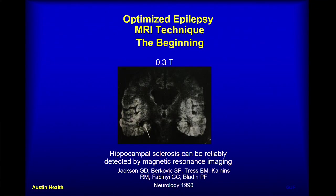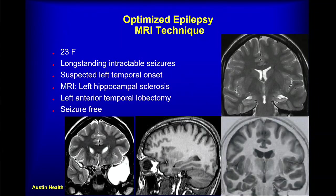To illustrate the importance of an optimised technique: a young woman with long-standing intractable seizures, suspicious of left temporal onset, showed a normal right hippocampus and an atrophic, small, abnormal signal on the left — with abnormal signal on T1 as well. She had a temporal lobectomy and was seizure-free. Hippocampal sclerosis historically has been the most common pathology resected. If we are going to optimally image for epilepsy, we need to assess the hippocampus well.